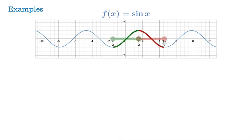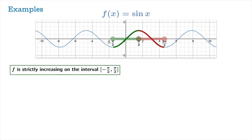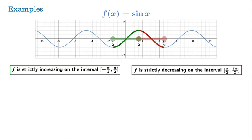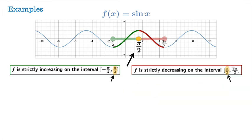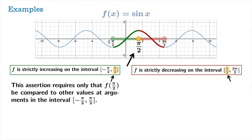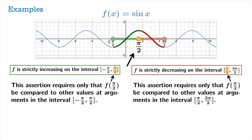Here's something that can trip up students when they first learn these definitions. f is indeed strictly increasing on the closed interval from −π/2 to π/2, and strictly decreasing on the closed interval from π/2 to 3π/2. You might be wondering about π/2 — it seems to be caught as an endpoint of both of these intervals. Isn't it a contradiction? How can an argument lie in an interval where you're claiming strictly increasing behavior, and also an interval where you're claiming strictly decreasing behavior?